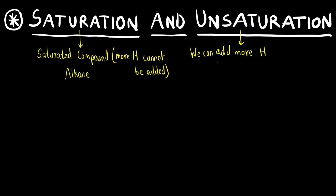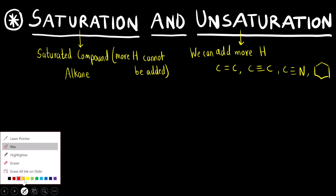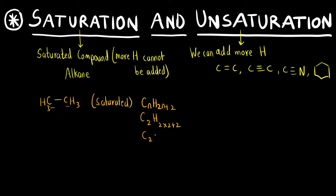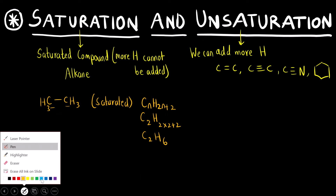An example of an unsaturated compound is alkyne — any compound that has a triple bond or a ring. Let us take the first example of the simplest alkane: CH3-CH3. This is a saturated compound. The general molecular formula is CnH(2n+2). For N=2, we get C2H6, which is the molecular formula for ethane, a saturated compound.